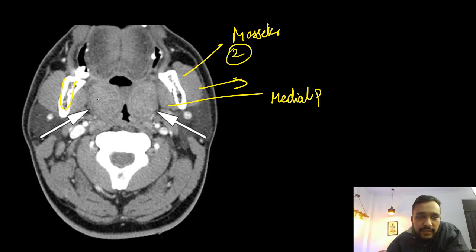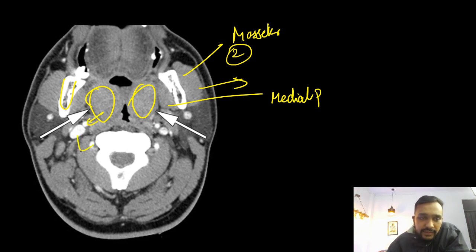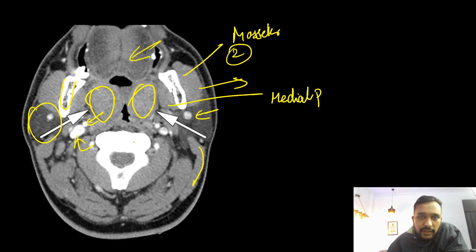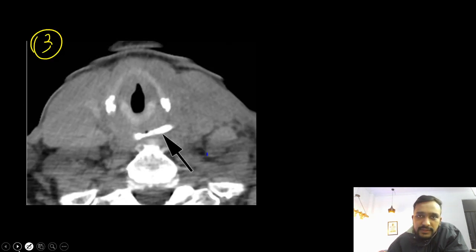Here you can see that this was a case of bilateral enlarged tonsils seen in a patient with tonsillitis. This is your common carotid artery, internal jugular vein. These are your parotid glands. This is your sternocleidomastoid muscle, retromandibular vein, and this is your tongue. These are a few normal structures that you can see within the neck.